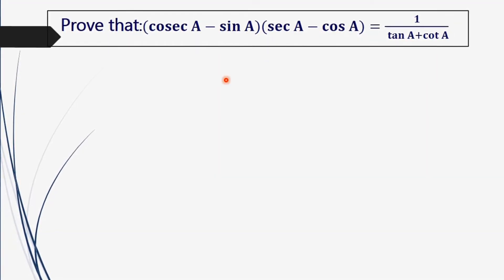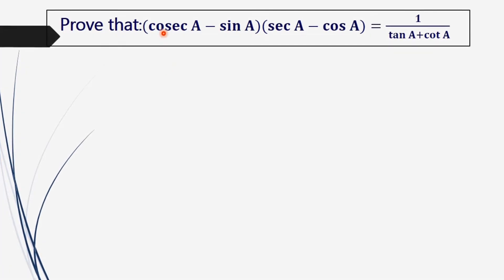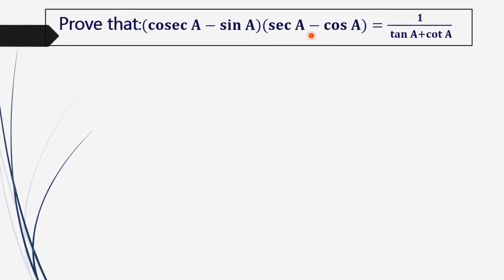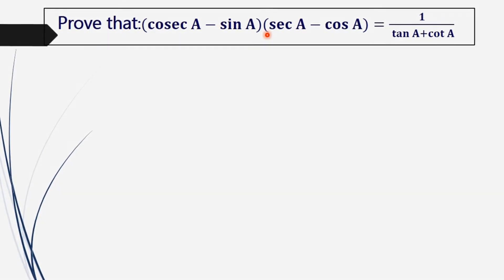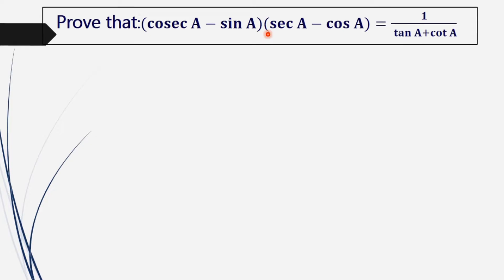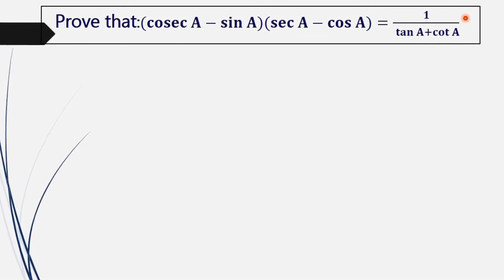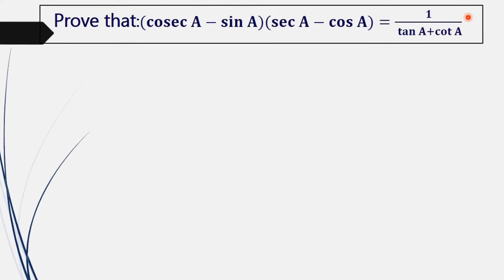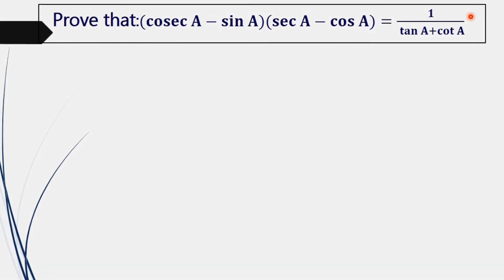We are going to adopt a method where we will prove the LHS of this equation is equal to a certain term, and then we will prove the RHS of this equation is also equal to that particular term. Hence, we prove the result that LHS equals RHS.